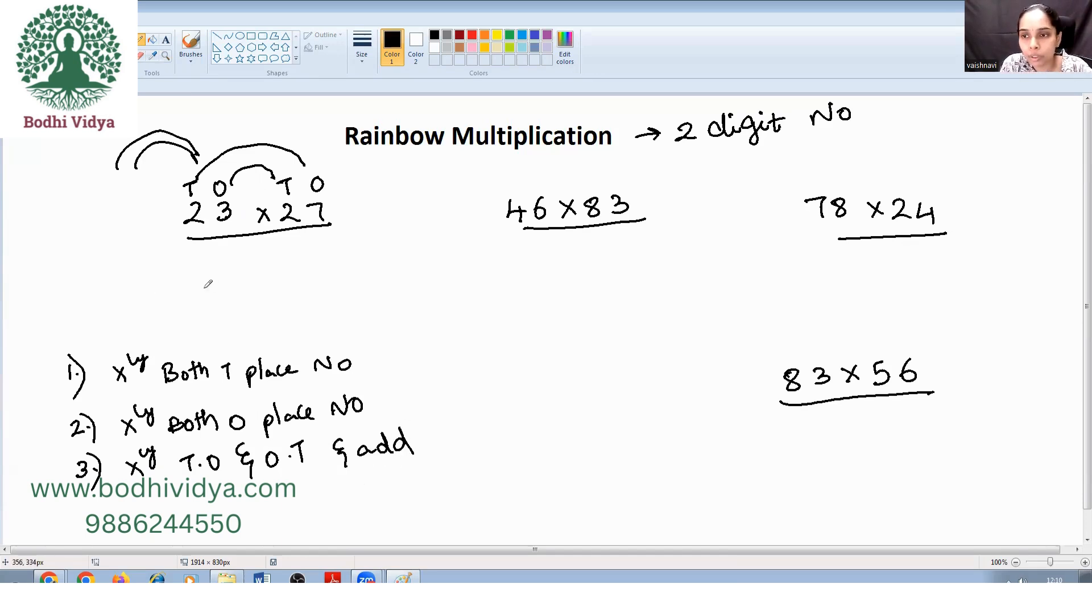So the first term is got by multiplying tens into tens. Two twos are four and three sevens is how much? Twenty one. Now it is two into seven is what? Fourteen plus three into two is what? Six. So it is four, twenty and twenty one. Now it is dodging method. So it is six to one. Yes, it is six to one. Now we will look into it. See, this is for basic understanding. From now on, we will do it directly.